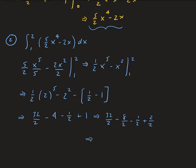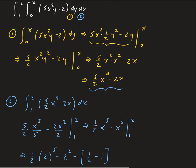So we get 32 minus 8 minus 1 plus 2, all over 2. That gives us 25 over 2. That is our solution to this double integral.